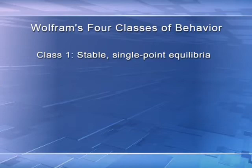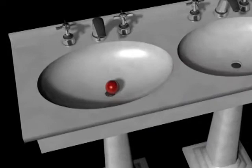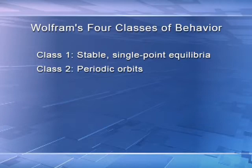Wolfram breaks systems into four classes. Class one behaviors are stable — single point equilibria. Like a ball sitting at the bottom of a basin: push it up a side, it comes back. We can also have systems of diverse interacting agents that end up in equilibrium — like a farmer's market with a fairly stable set of prices and sales. The second class are periodic orbits — a regular sequence of states, like a stoplight cycling through red, yellow, green, or the Earth rotating around the sun. In a mathematical model of predators and prey, populations of rabbits and foxes oscillate in a regular pattern.